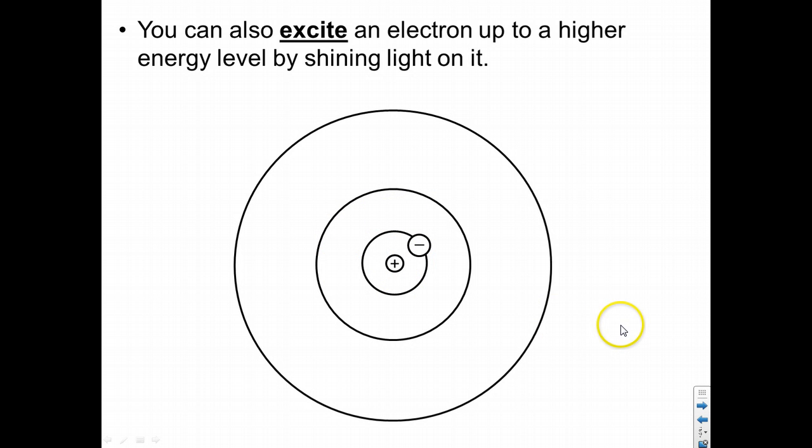If we want, we can excite an electron up to a higher energy level by shining light on it. So here is the light, it hits the electron, and the electron absorbs the light.